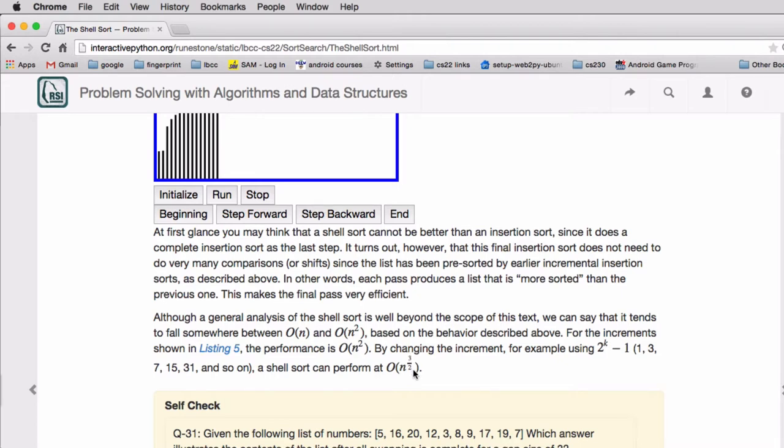So it's better than n, but it's slower than n, but it's not as slow as n squared. So that is the shell sort.